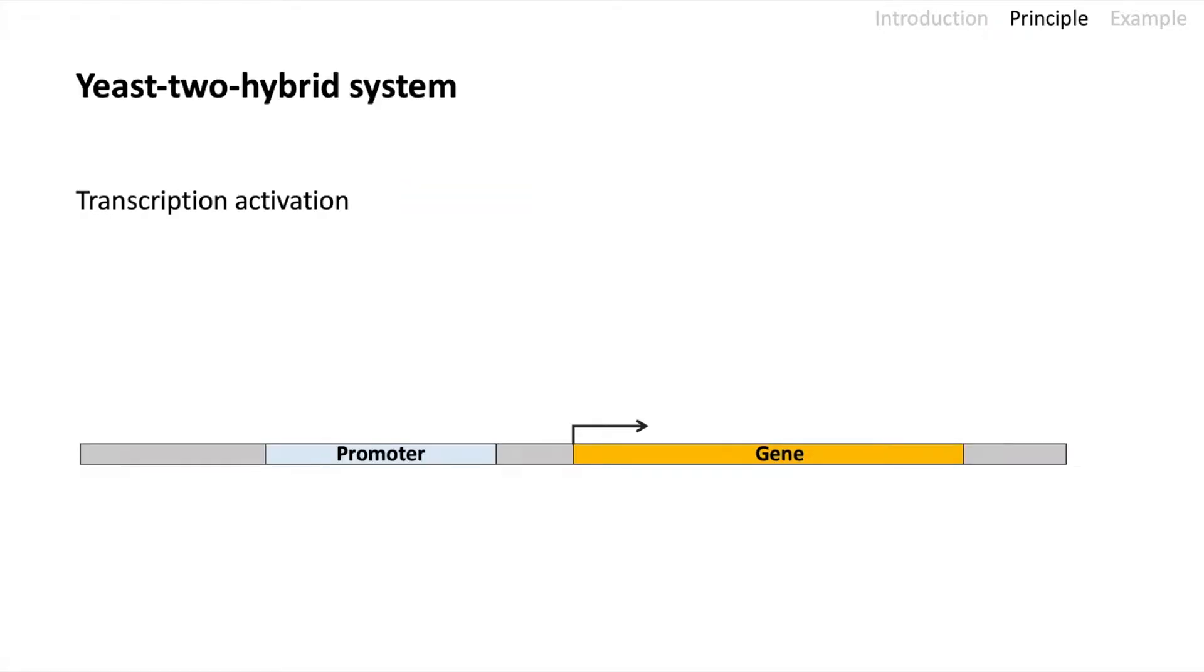To do that I start off with transcription activation. Here we have a basic DNA sequence and we have a promoter sequence upstream of a gene sequence. The first thing which happens is that the transcription factor binds to the promoter region. Then the transcription factor recruits RNA polymerase 2. RNA polymerase 2 can now read the gene sequence and synthesize RNA.